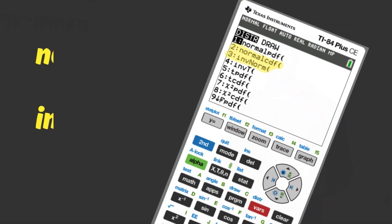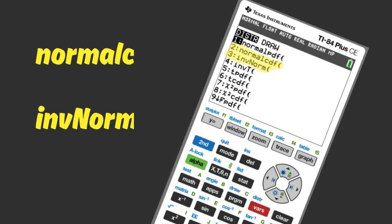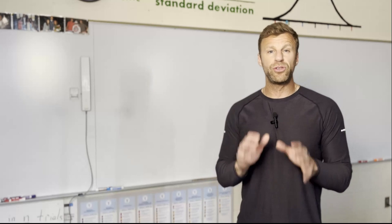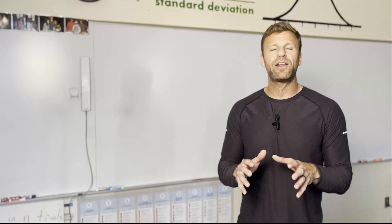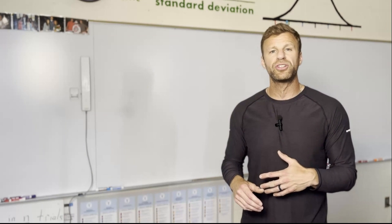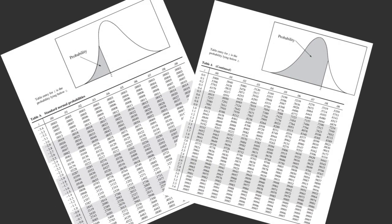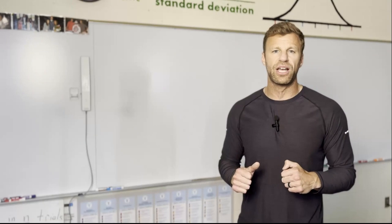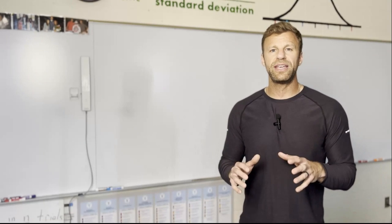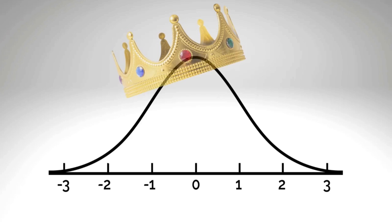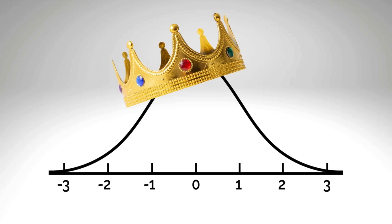I'm going to use normal CDF and InvNorm on my TI-84 calculator to find probabilities and proportions within the normal distribution and to look up Z-scores. If you don't want to use the TI-84, you can use the equivalent functions on a Casio calculator, or you can always go old school and use the Z-tables provided in the AP Stats formula section. The normal model is king, so you better know how to use it, and it all starts with the formula for a Z-score.